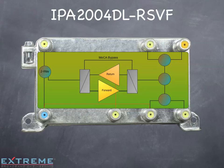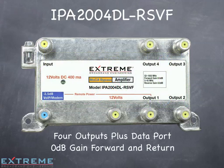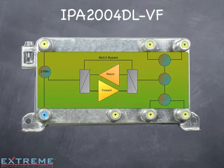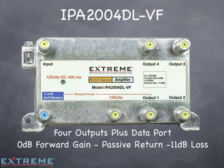The third bypass MOCA amplifier is a four output amplifier with a data port and will allow the MOCA signal to flow between all ports. It has 0 dB of gain in the forward and return. The fourth is a four output data plus amplifier with passive return, with 0 dB of gain in the forward and passive return with 11 dB of loss.